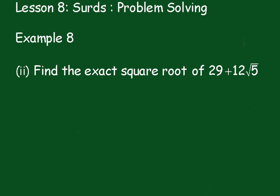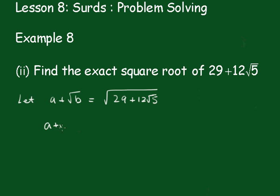In part 2 we have to find the exact square root of 29 plus 12 root 5. You can pause the video and have a go yourself — you just need to be careful with the signs at the end and check your solutions. As before, we'll let a plus root b equal the square root of 29 plus 12 root 5. Squaring both sides we get a plus root b, all squared, equals 29 plus — taking that inside — squaring and multiplying by 5 we get 720.